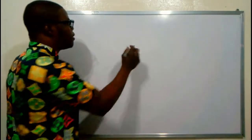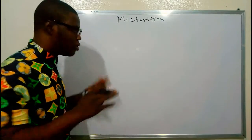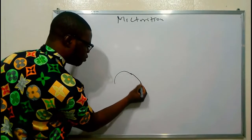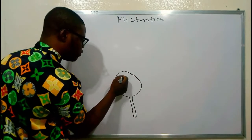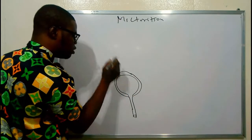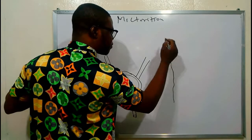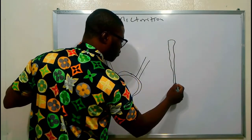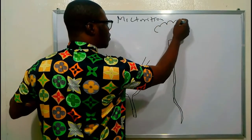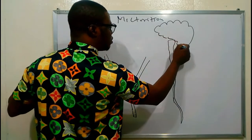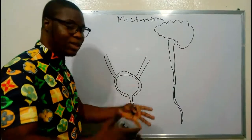To understand micturition, we have to talk about four to five organs. The first one is the urinary bladder, and the urethra below it. We also have the spinal cord and the brain. The mechanism of micturition occurs within all of these structures.